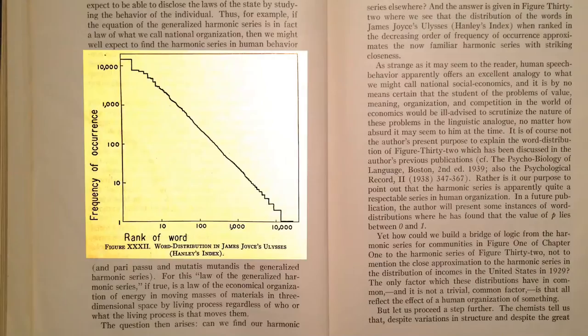In the 1940s, the American linguist George Zipf did a statistical study of words in Ulysses and found that on logarithmic graph paper they produce a straight line of 45 degrees. This turns out to be true of many other texts and shows something about how language works. Zipf also found this pattern in other areas.